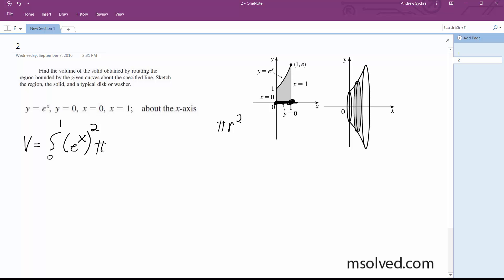We've got to integrate this: pi times e raised to the 2x. The square just ends up being 2x.